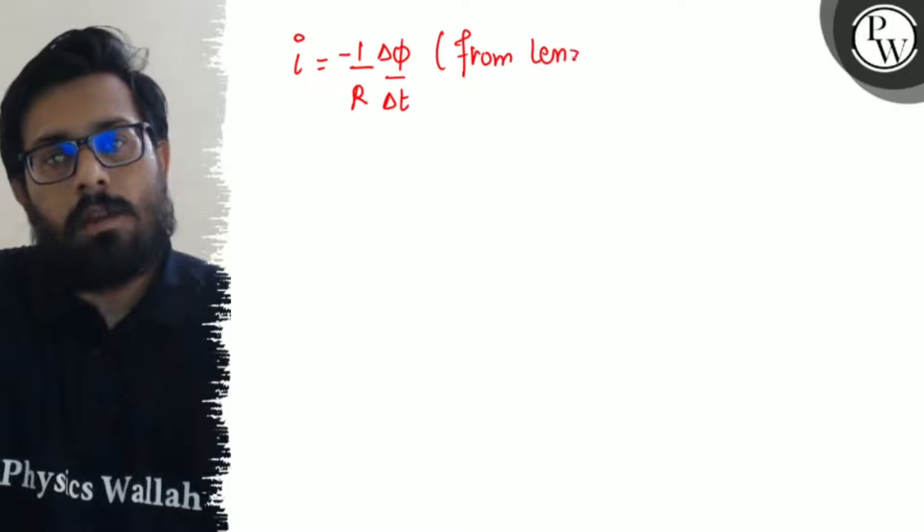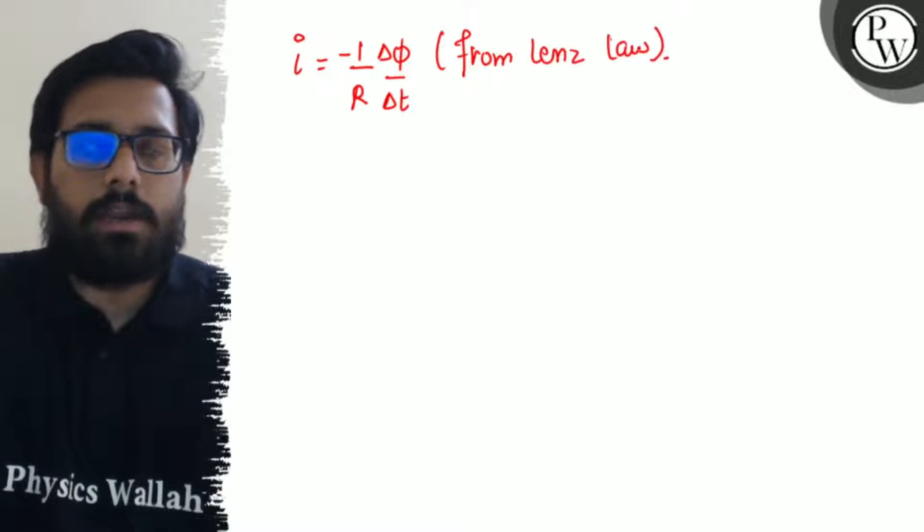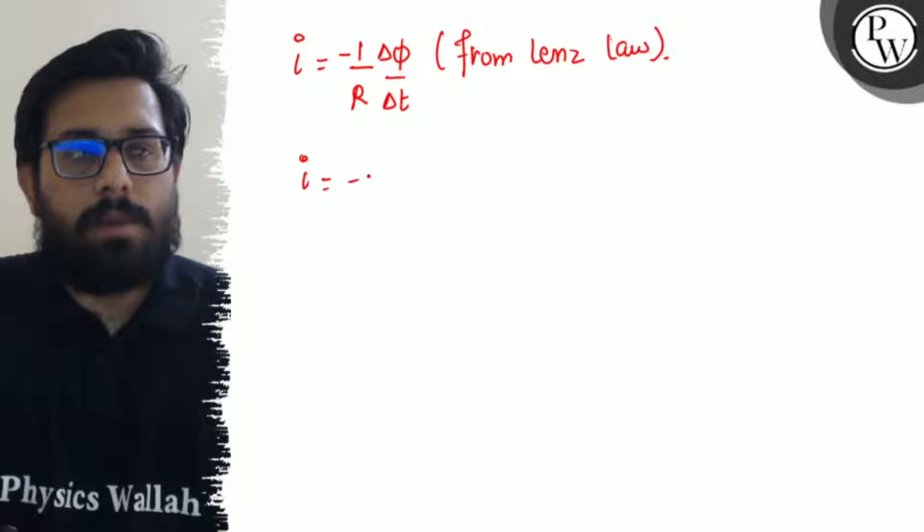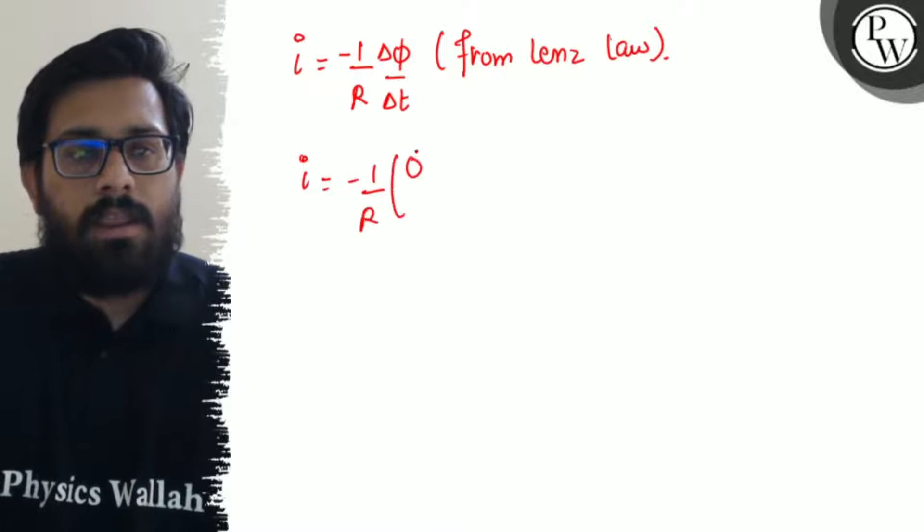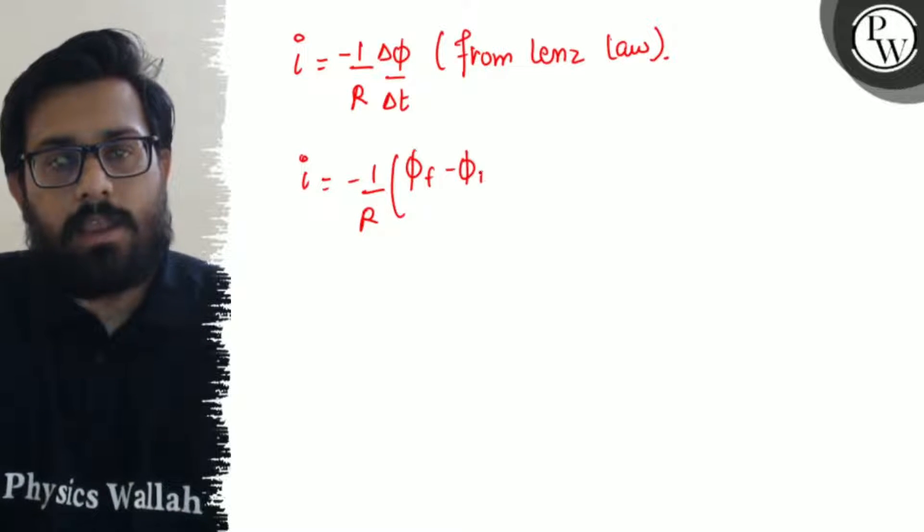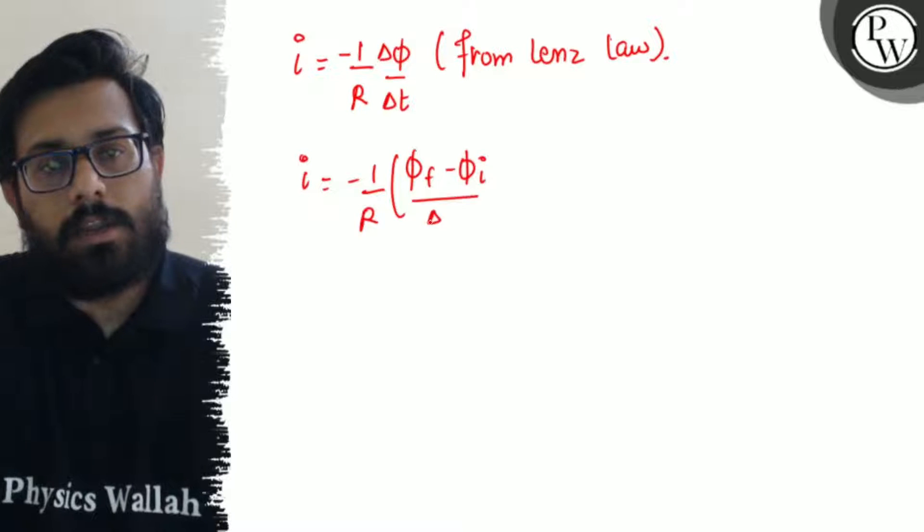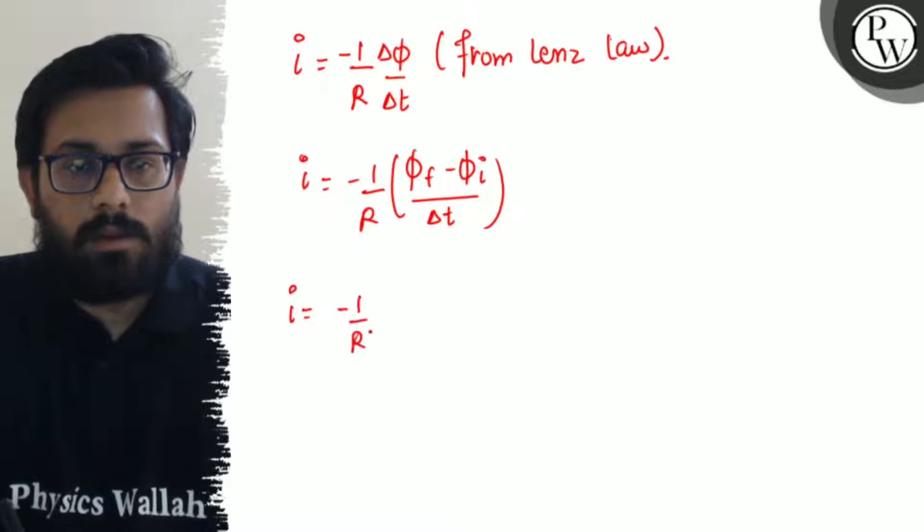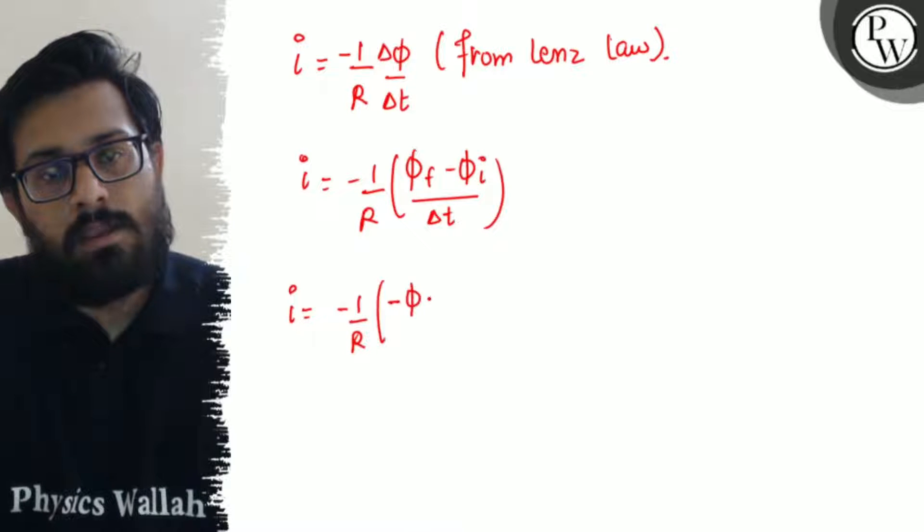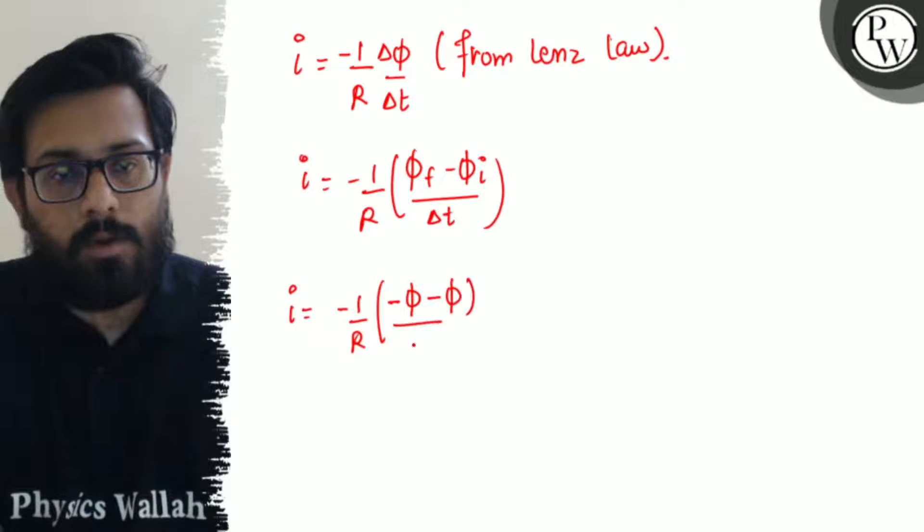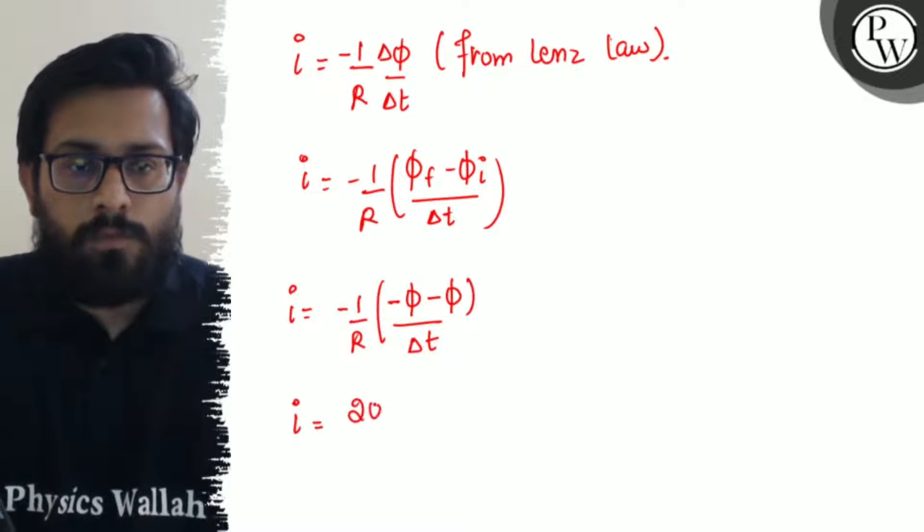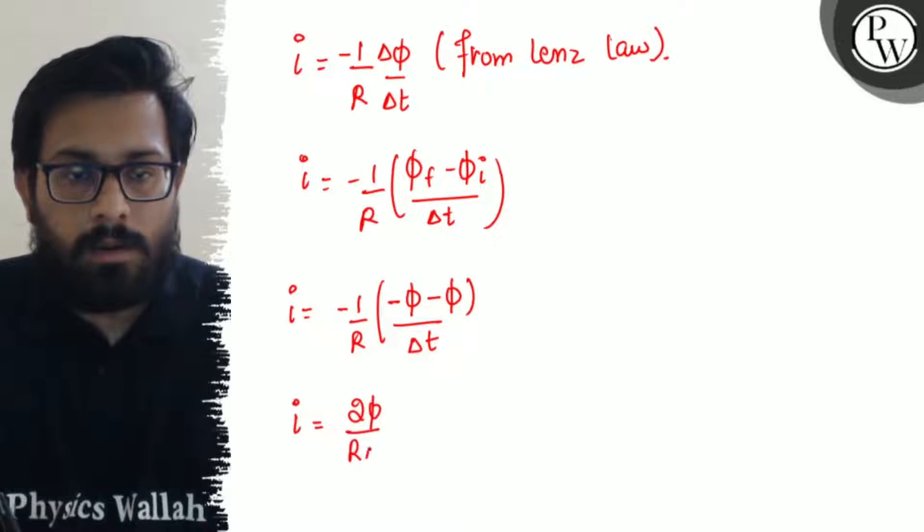From Lenz's law, the induced current is -1/R × dφ/dt. So i equals -1/R × (φ_final - φ_initial)/Δt. So i comes out to be -1/R × (-φ - φ)/Δt. So induced current comes out to be 2φ/(R×Δt).